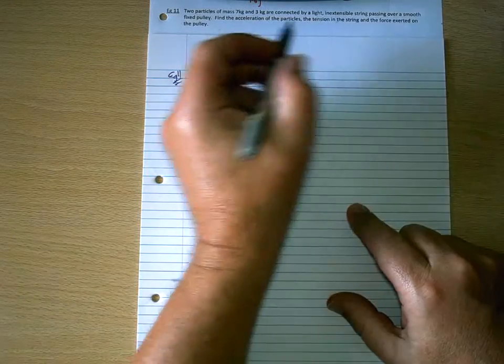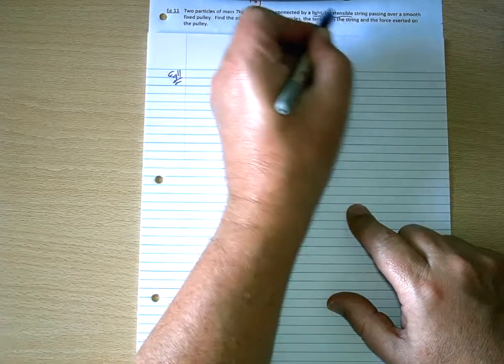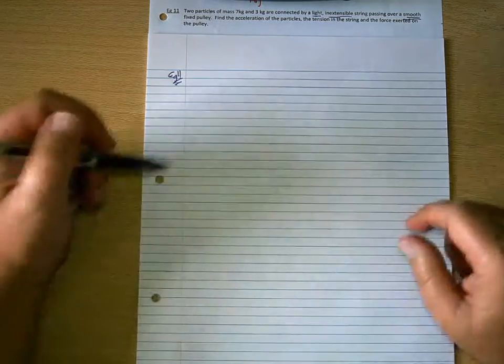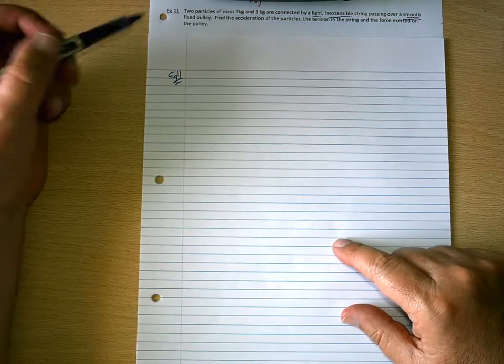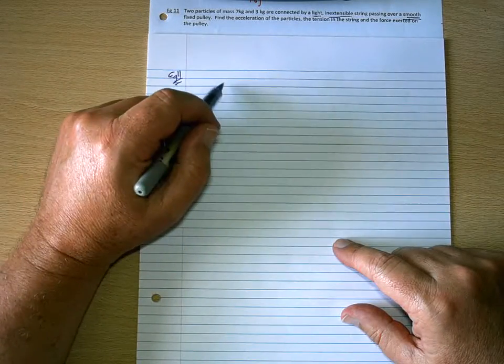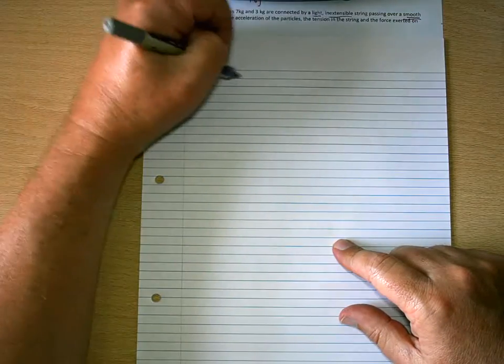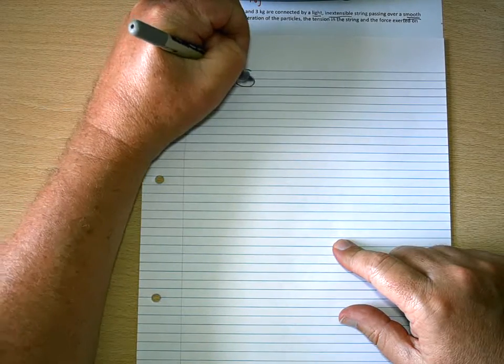Right, so before we go and do the maths, I want to just quickly talk about what these statements, or these words, are triggering. Which allows us to model this particular situation. The fact that the string is light means that, well if we just draw a little sketch first of all, to illustrate this.